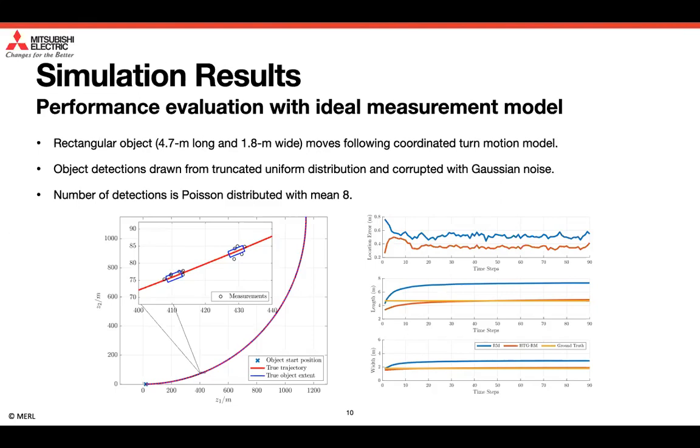We compare the performance of the proposed method with modified random matrix update step with the original random matrix approach. As can be seen from the result, the algorithm is initialized with object state deviated from the ground truth. The object length and width estimates can converge to the ground truth after a few time steps. In general, we can conclude that the proposed method can give fairly accurate object length and width estimation, and the localization performance is improved as well.